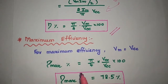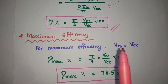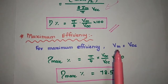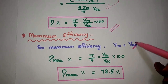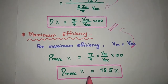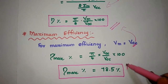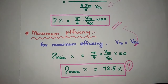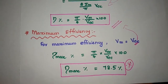To find the maximum efficiency, we consider Vm equal to VCC — that is, the maximum output voltage equals the supply voltage VCC. Substituting this condition, Vm/VCC becomes 1, and we get the output as 78.5%. This is the maximum efficiency of the class B amplifier — it is very important to note that this maximum efficiency is greater than that of the class A amplifier.